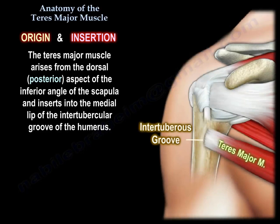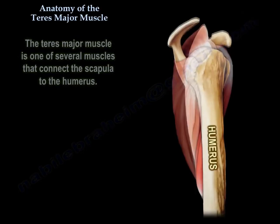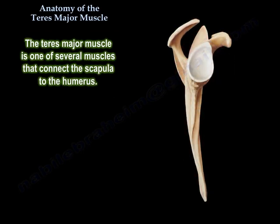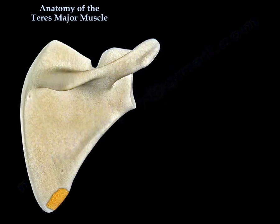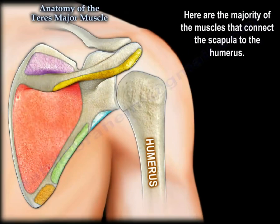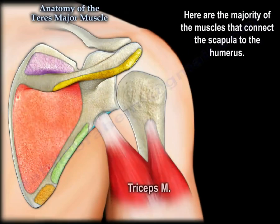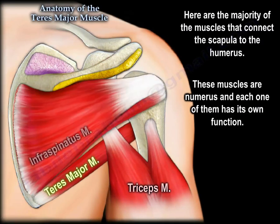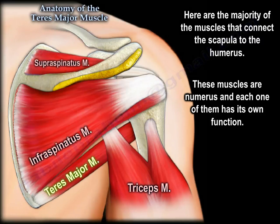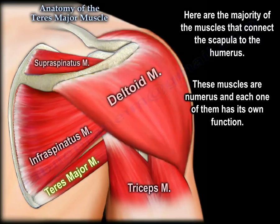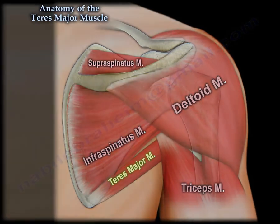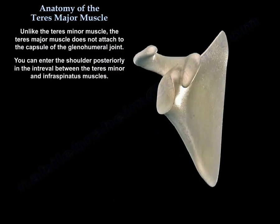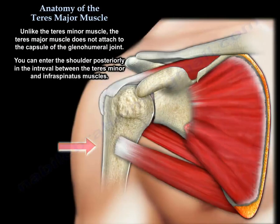The teres major muscle is one of several muscles that connect the scapula to the humerus. Here are the majority of the muscles that connect the scapula to the humerus. As you can see, these muscles are numerous and each one of them has its own function.